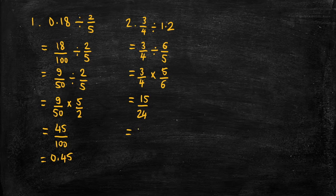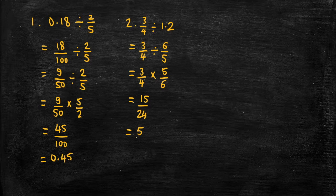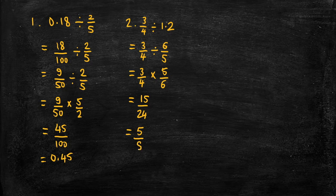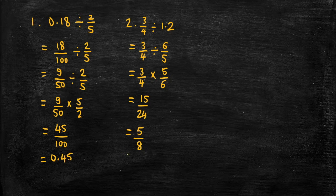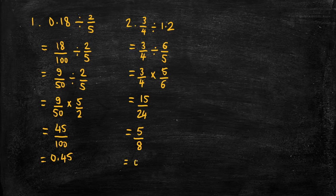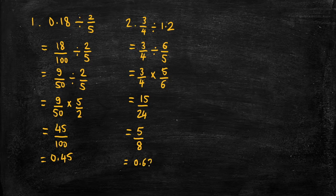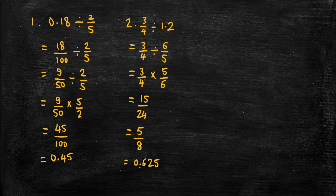So take out the factor of 3 in 15 and we'll get 5, take out factor 3 from 24, we'll get 8. And we could stop here. We could leave the answer as a fraction here or we could go one more step and express that as a decimal. 5 eighths is the same as 0.625.